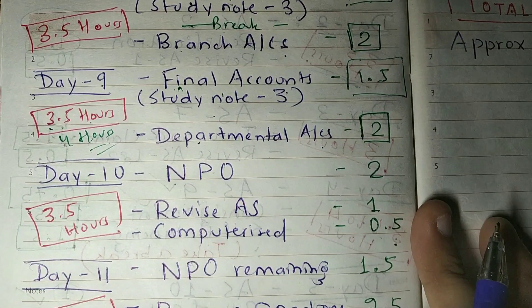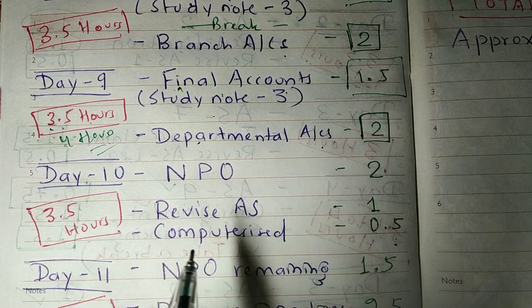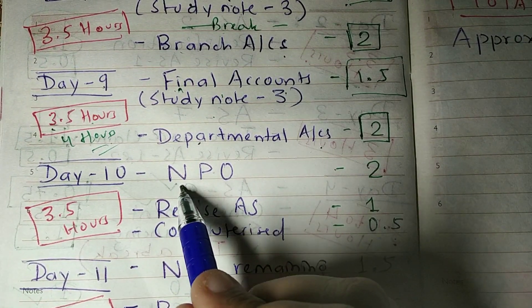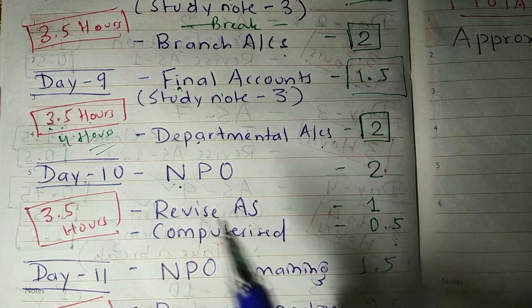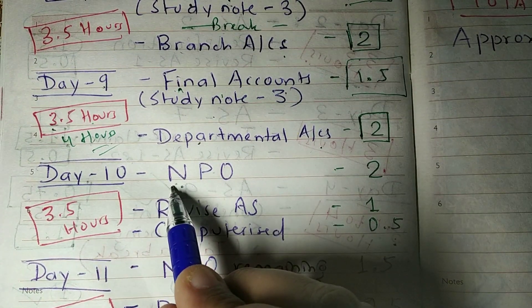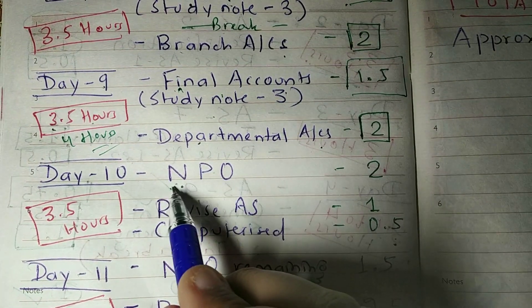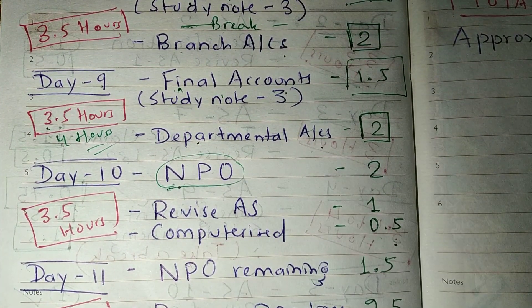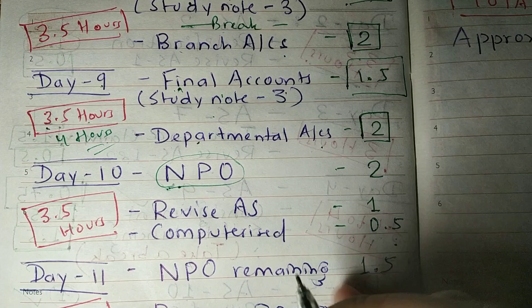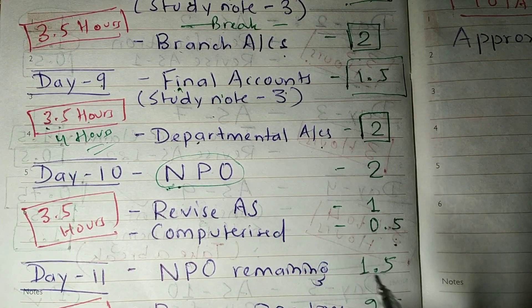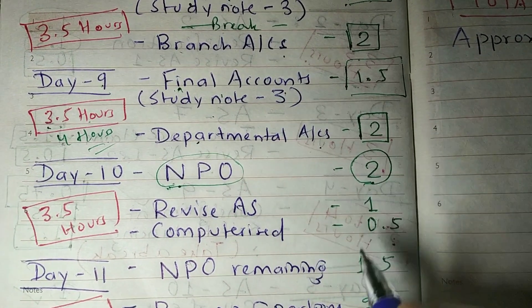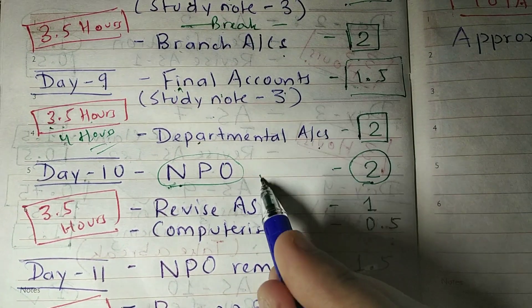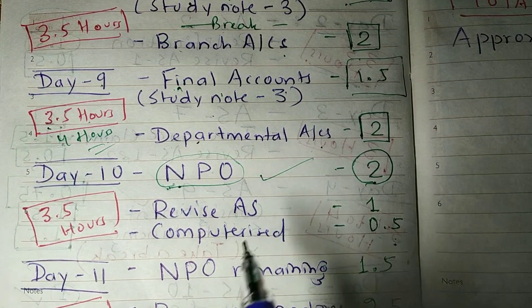On Day 10, you have to study NPO — that is, the final accounts for Non-Profit Organizations. You will study this chapter for 2 hours, covering many small and large questions. If you study with full concentration, 2 hours should be sufficient.